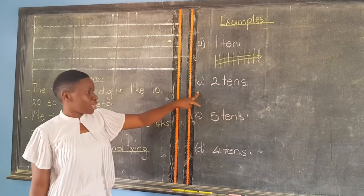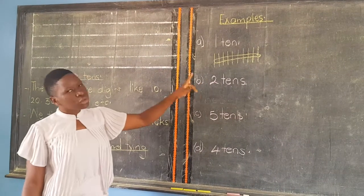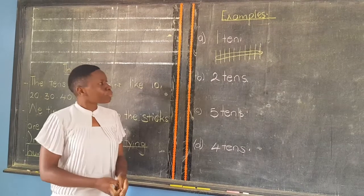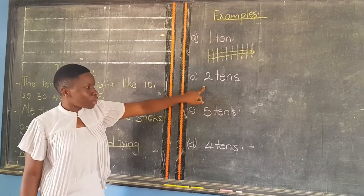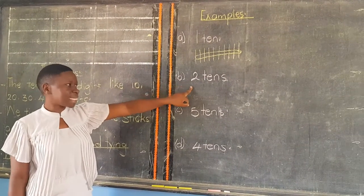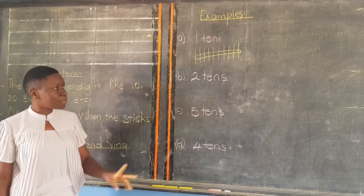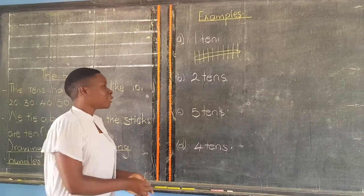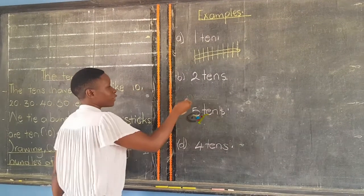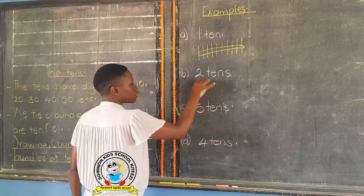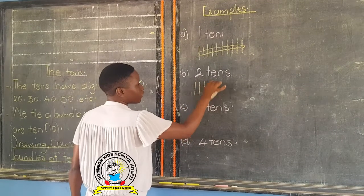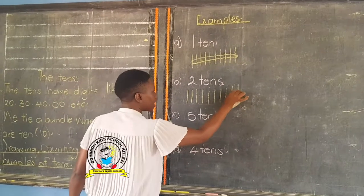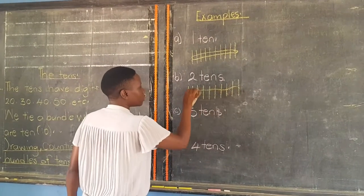Then Part B — we have two tens. Two tens, meaning we are going to draw two bundles of tens, and in each bundle there must be ten sticks. So we count very fast: one, two, three, four, five, six, seven, eight, nine, ten. You tie.